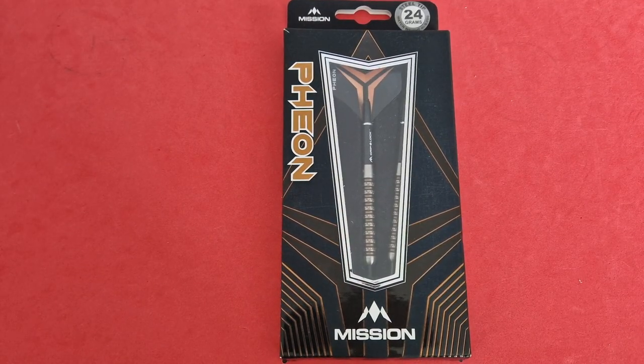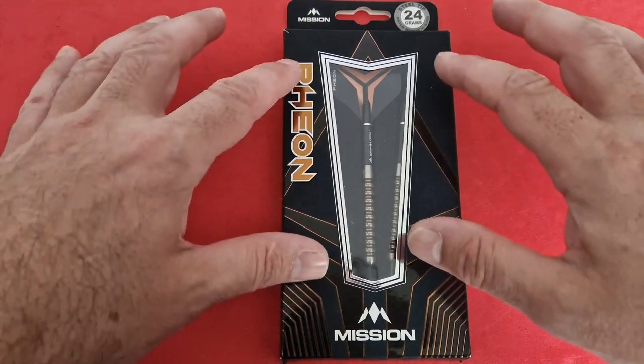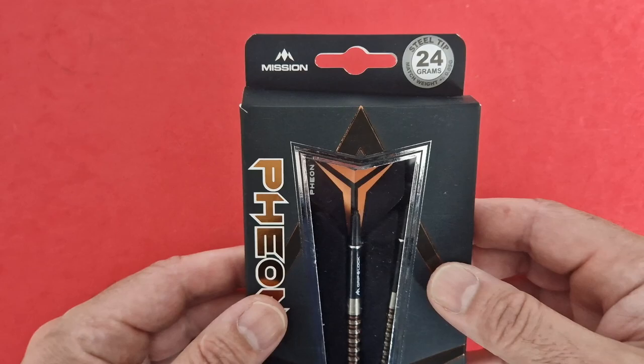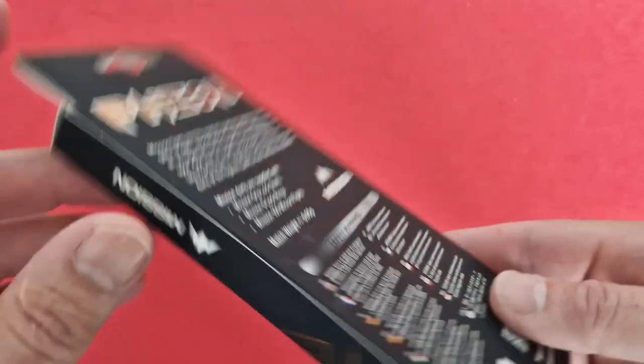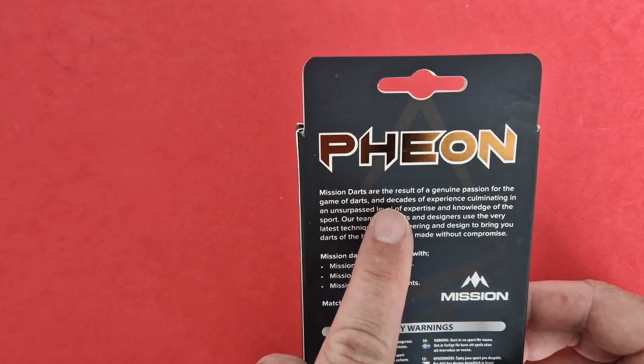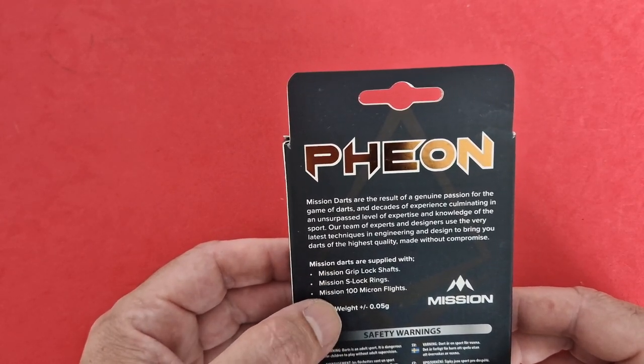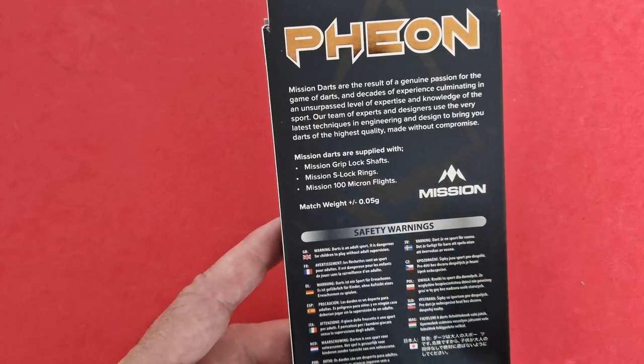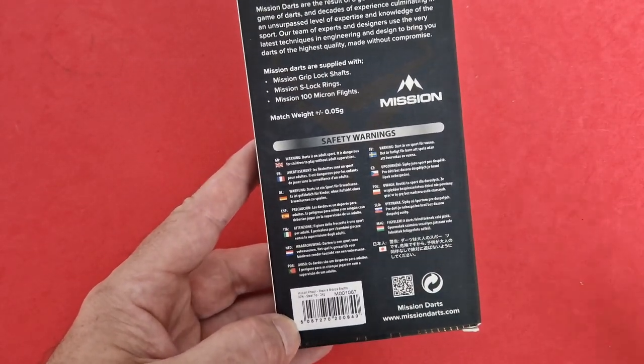First look at the box, it's just a standard Mission box. You get the name Fionn on the outside, Mission logo, nice little designs on the outside, kind of sci-fi looking design. You've got a clear window with the barrel, the stem and the flights, telling you here it's 24 grams and it's match weight 2.05 of a gram. On the side of the box got the Fionn and Mission on the other side, the exact same so for these people that stack them on shelves you get to see what darts are.